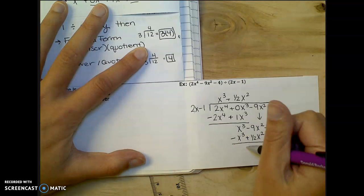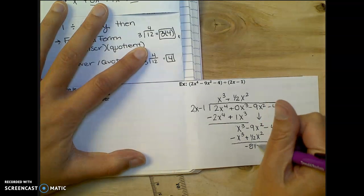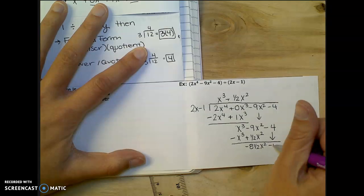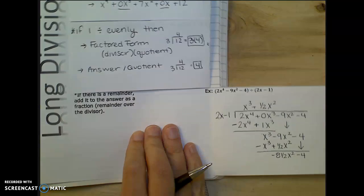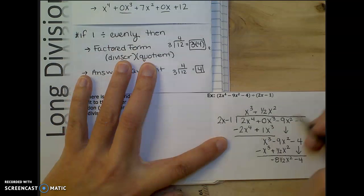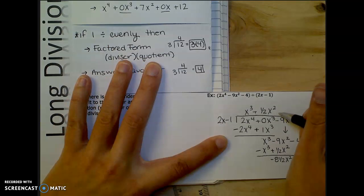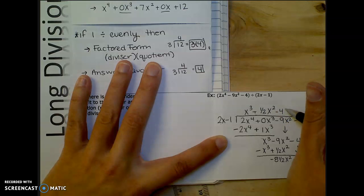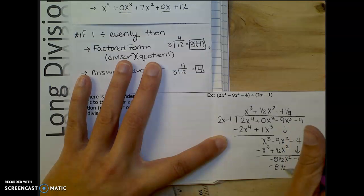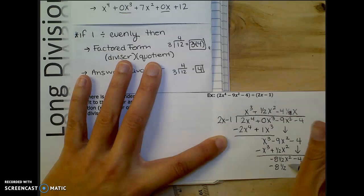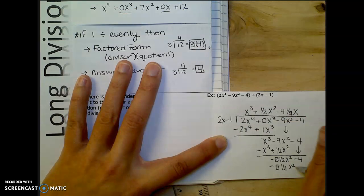So that would be zero. And then here I'd be at negative 8 and a half x squared. And I drop down the negative 4. And I'm just thinking 2 times what will get me negative 8 and a half? Well, probably negative 4 and a fourth. If I double that completely. If I double that I'll be at negative 8 and a half. Oh, and I need an x on it to get me x squared. Then when I times it here we'll have negative 4 and a fourth x.